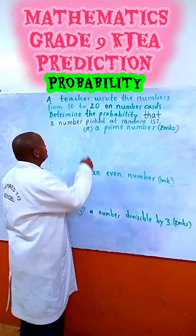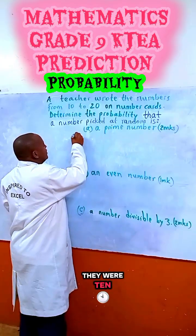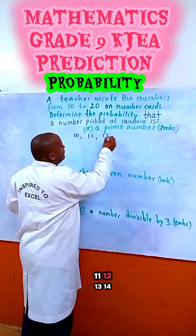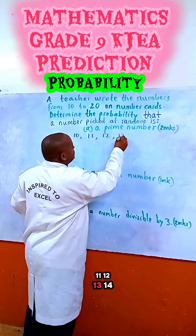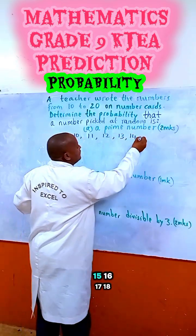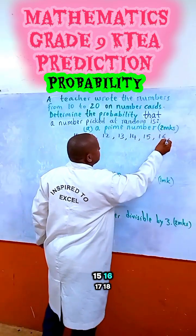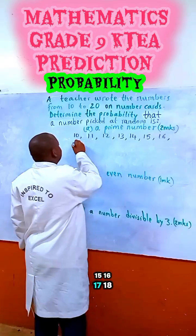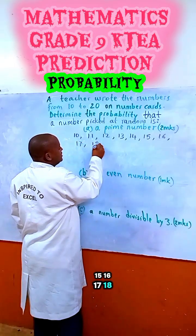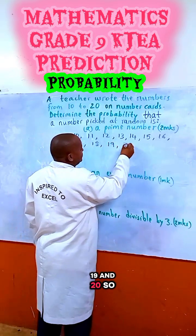So, the numbers were from 10 to 20. Let us write them: 10, 11, 12, 13, 14, 15, 16, 17, 18, 19, and 20.